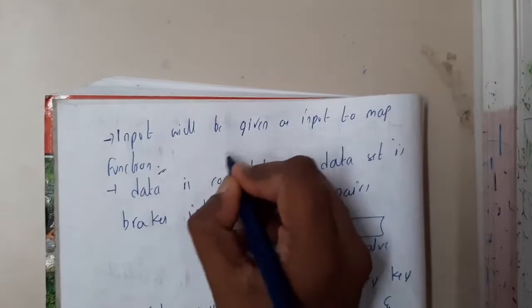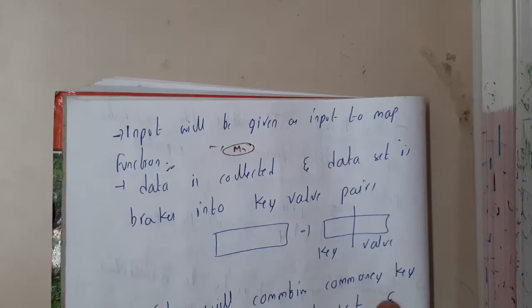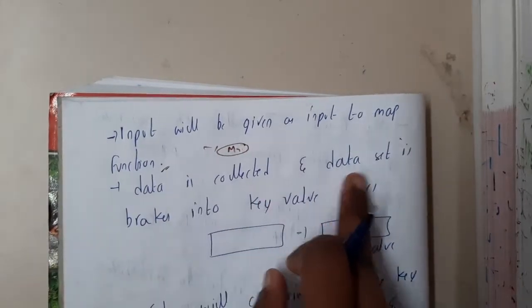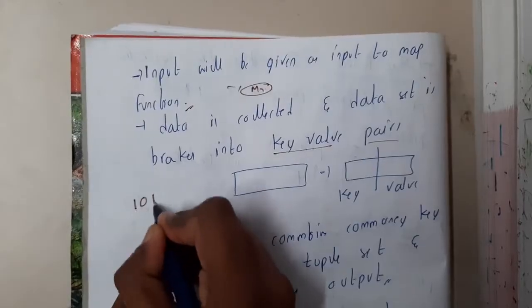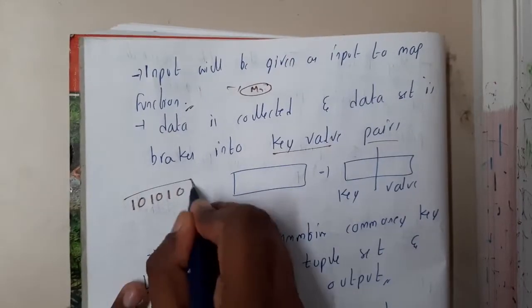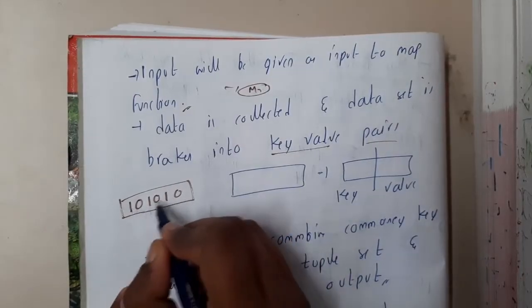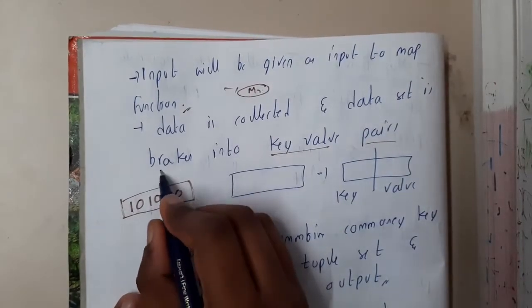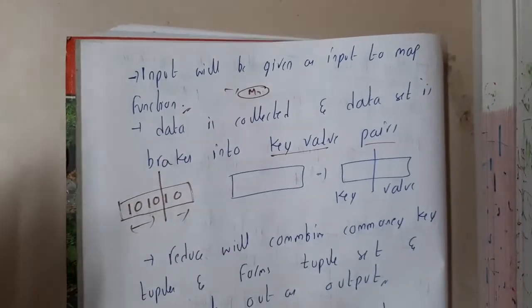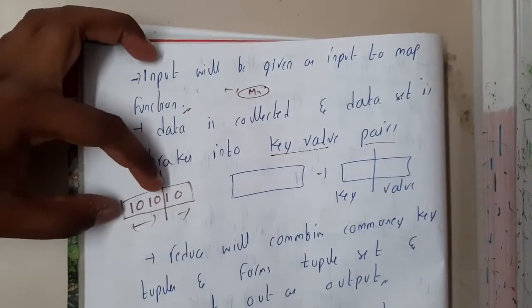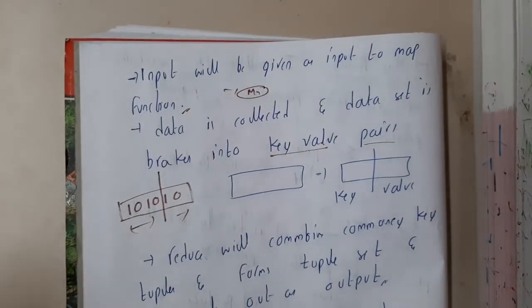Input will be given to the map function. The data is collected and the dataset is broken into key-value pairs. Assume the value is 10101, and the key-value format should be four bits. In that situation, breaking here, this will be our key and this will be our value. This value is indicated by this key, so they are in some relation.